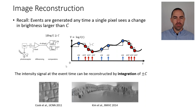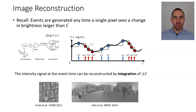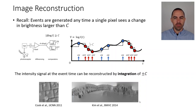The idea of image reconstruction is that in principle we could obtain absolute intensity if we could integrate these changes to get back the original signal — or some approximation of it. There are some early works on this from 2011 by the group at the Institute of Neuroinformatics in Zurich, and also the paper we are now going to take a look at from the group at Imperial College.